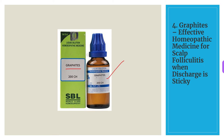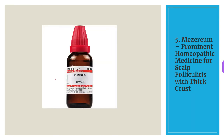The fifth medicine for scalp folliculitis is Mezereum. Mezereum works wonders in cases of scalp folliculitis where the unique feature is the formation of a thick crust on the scalp. Thick discharges may collect under these crusts, and there may also be intolerable itching with an oozy, gluey discharge. The patient's hair may become matted due to the discharge, a condition known as plica polonica.